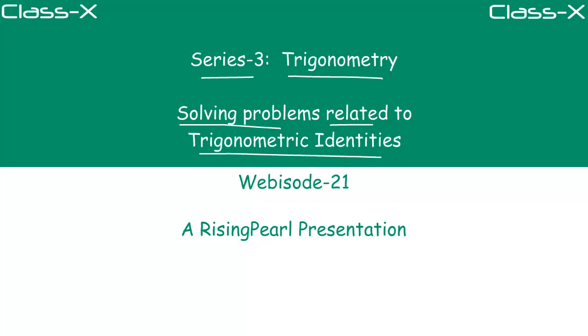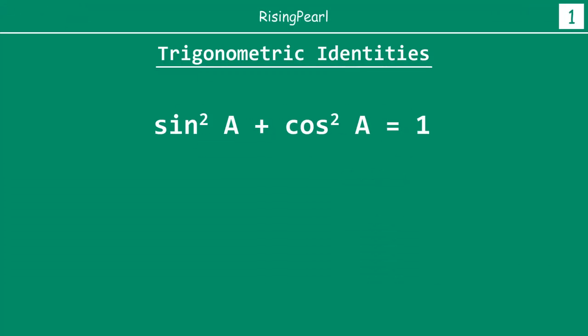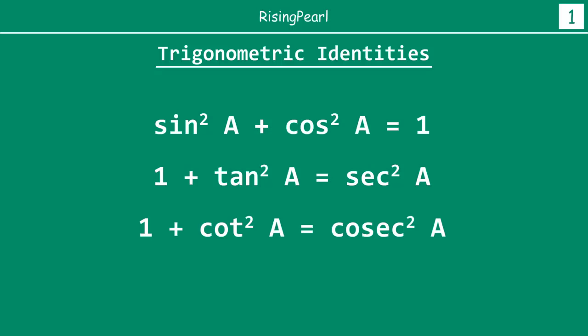In the last two webisodes we have been looking at what are the trigonometric identities. We looked at the first trigonometric identity: sine square a plus cos square a equal to 1. Then we looked at 1 plus tan square a equal to sec square a. And the third and final identity was 1 plus cot square a equal to cosec square a.